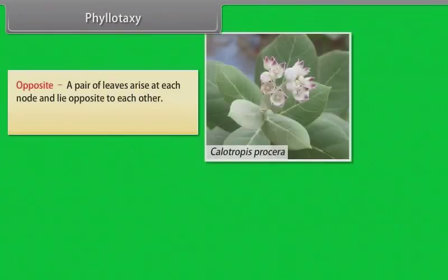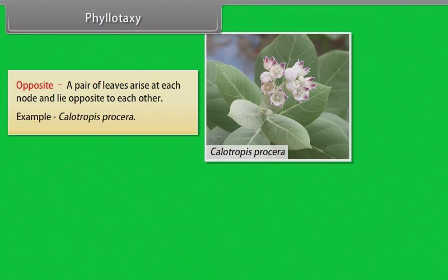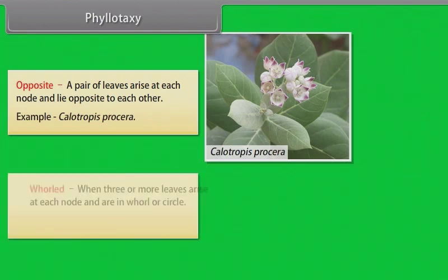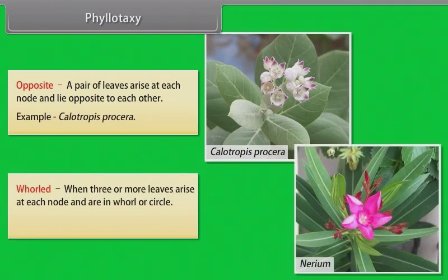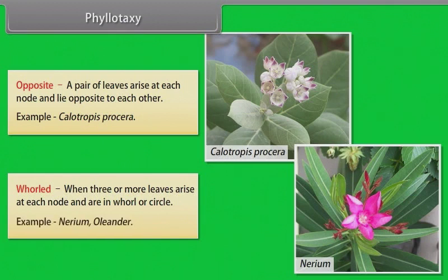Opposite: a pair of leaves arise at each node and lie opposite to each other. Example: Calotropis procera. Whorl: when three or more leaves arise at each node and are in a whorl or circle. Example: Nerium oleander.